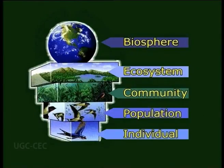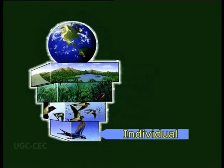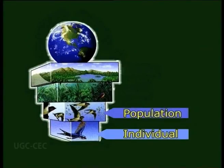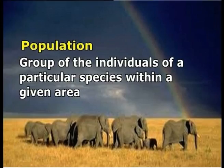Let us have a look at the diagram which explains various levels of ecology. The first ecological level comprises the individual organism, where ecology deals with how individuals are affected by and how they affect their environment. This individual organism is known as a species in ecological terms. A species is a group of organisms that share the same general physical characteristics and are able to interbreed and produce fertile offsprings.